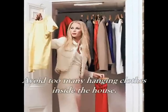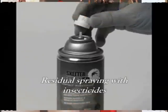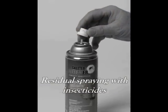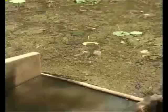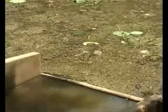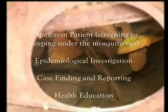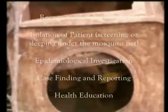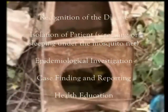Avoid too many hanging clothes inside the house. Use residual spraying with insecticides. The infective individual, contacts, and environment must do the following: recognition of the disease, isolation of patient, screening or sleeping under a mosquito net, epidemiological investigation, case finding and reporting, and health education.